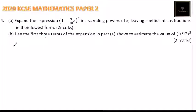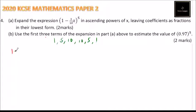We start with Part A. Using Pascal's triangle, the coefficients are 1, 5, 10, 10, 5, and 1. So with that, we should be able to expand (1 minus 3 over 10 x) raised to the power of 5.